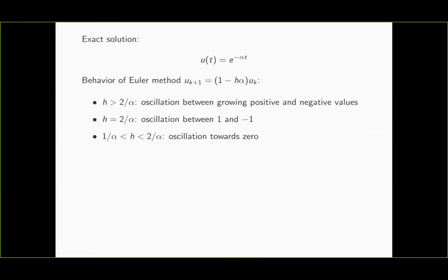If h is strictly between 1/α and 2/α, we still see oscillation, but these oscillations will dampen down and eventually die off as we converge towards 0. If we plug in h from this range of values into the update formula, we see that u_{k+1} is obtained from u_k by multiplication with a negative value strictly between 0 and -1. So it's a negative value but its magnitude is smaller than 1, which means we still see oscillation but the oscillation dampens off.